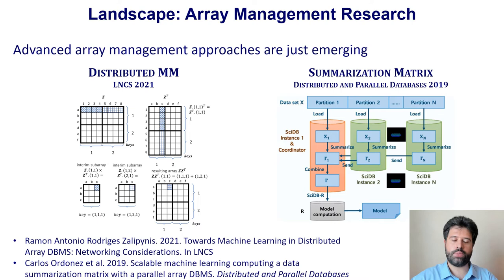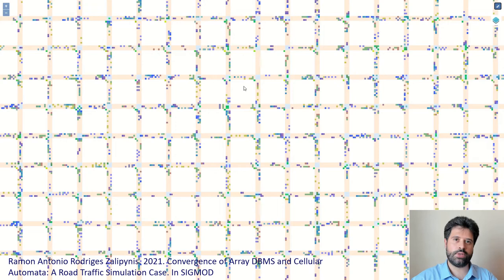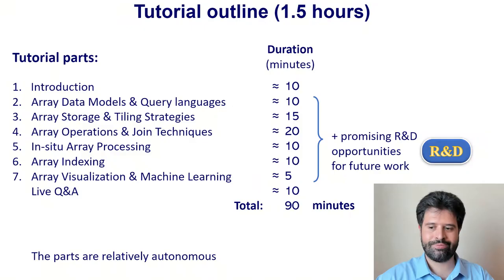Machine learning is just paving its way into Array DBMSs, so this whole direction has endless R&D opportunities. Novel research and development directions are opening up in the area of Array DBMS. For example, Kronos DB is the first array DBMS that can simulate the physical world.